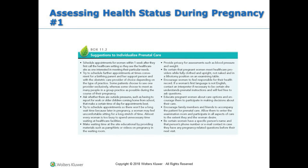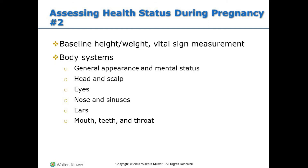Assessing health status during pregnancy with suggestions to individualize prenatal care. Baseline height and weight, vital sign measurement. Body systems reviewed include: general appearance and mental status, head and scalp, eyes, nose and sinuses, ears, mouth, teeth, and throat.